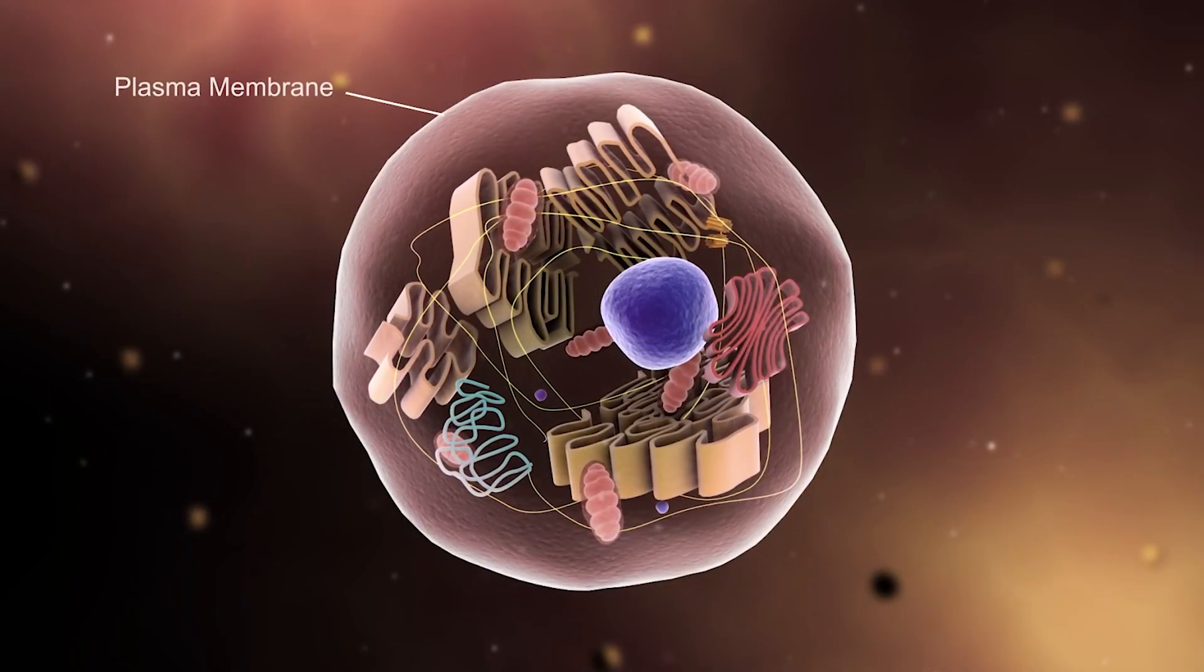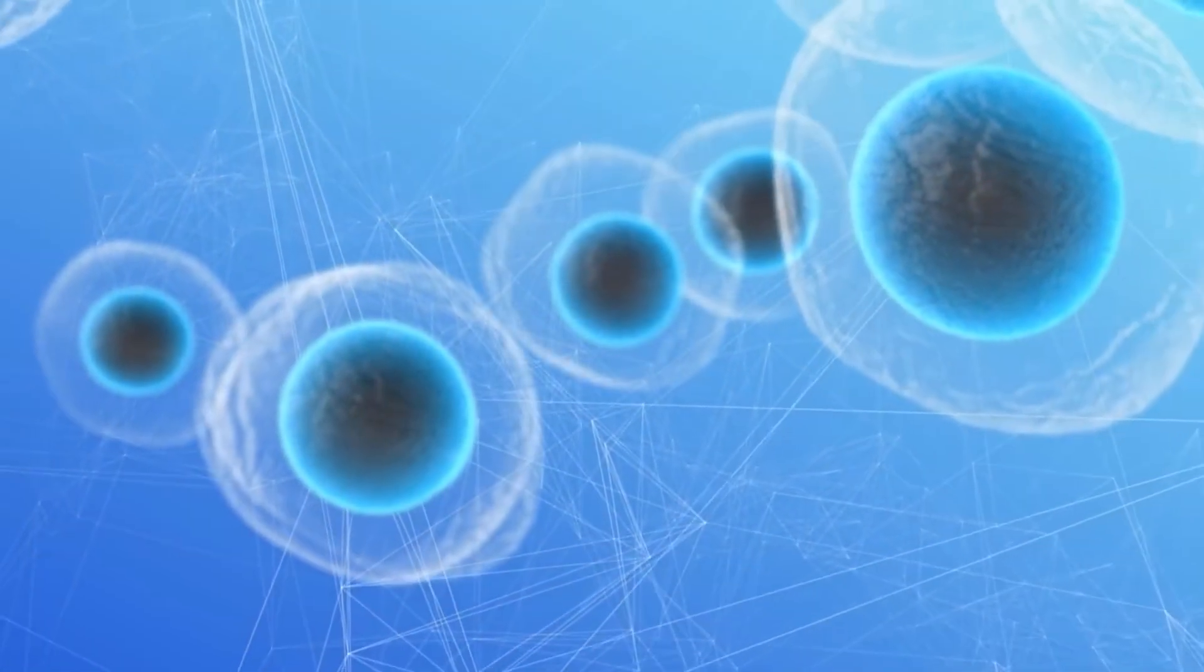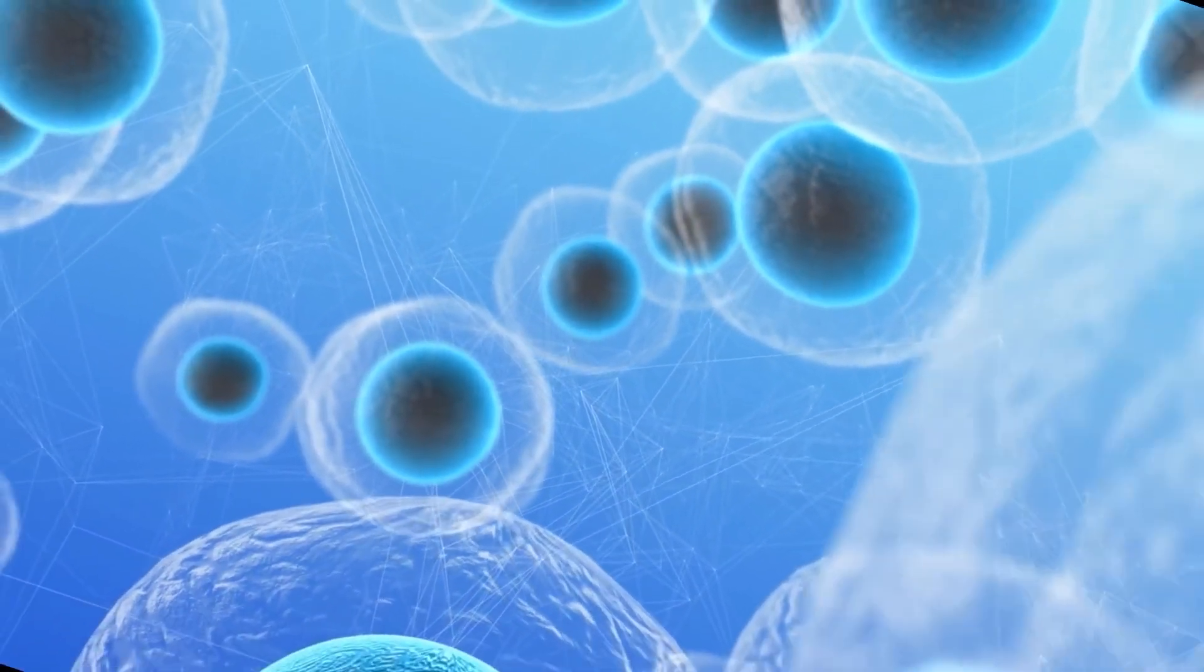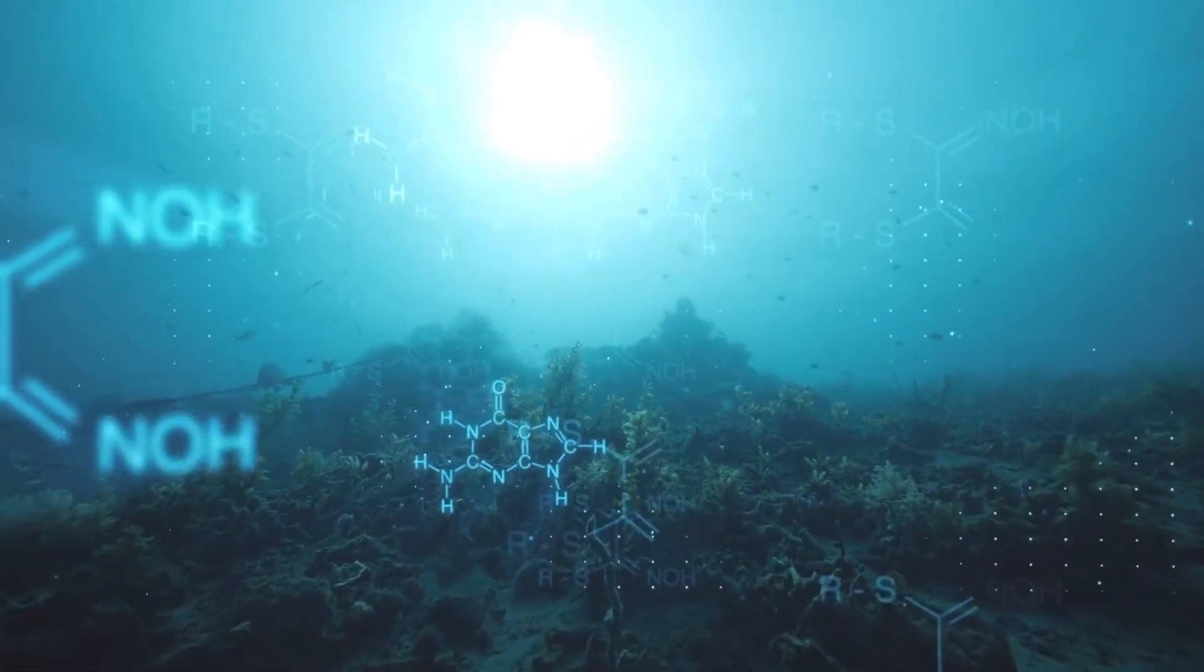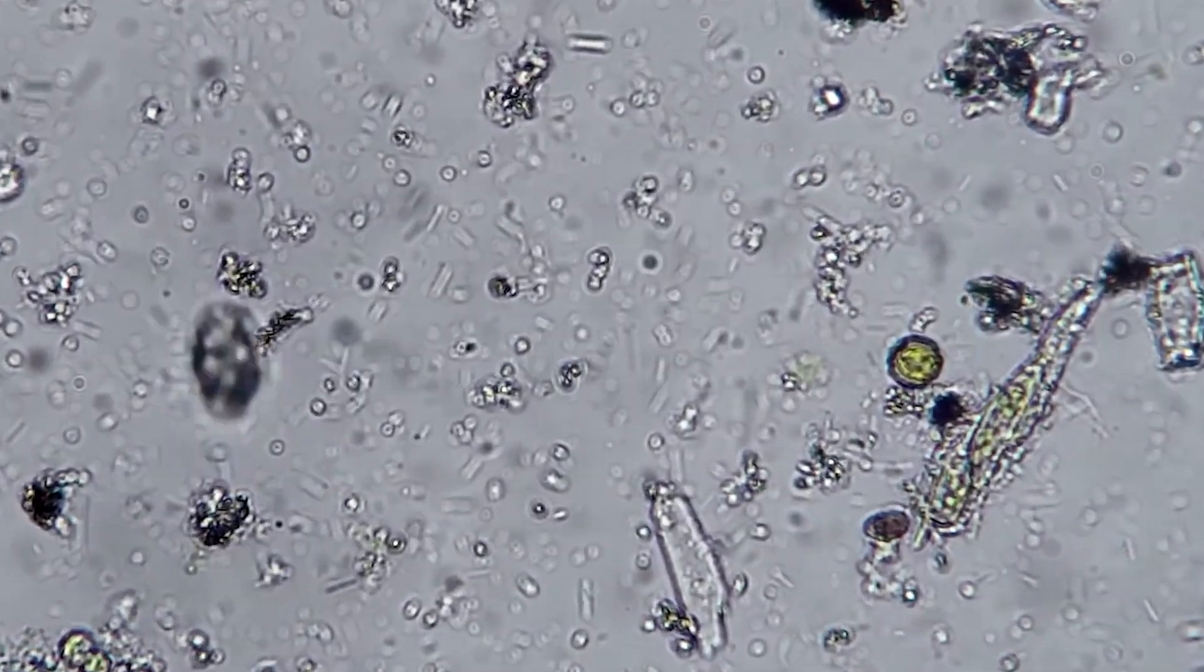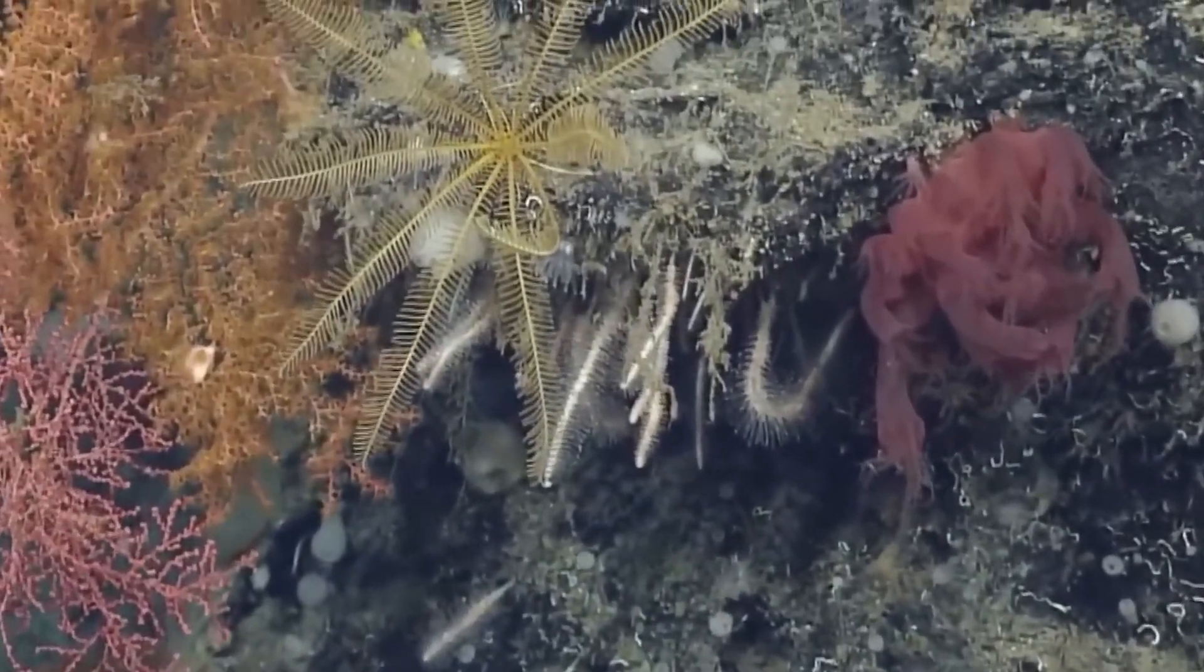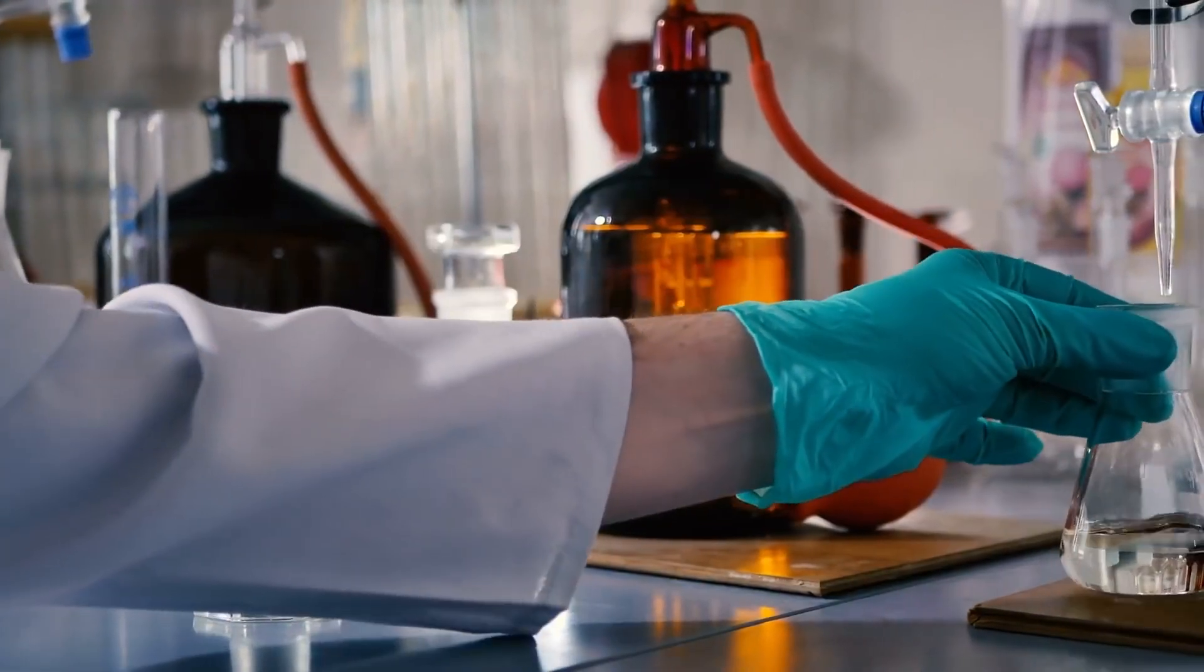Protocells were not alive in the way we define life today. They had no genome. No true metabolism. But they formed naturally. Tiny bubbles of lipids floating in water. Capable of absorbing molecules, growing, and even dividing. Like primitive containers, they protected chemical reactions happening inside. Some may have survived longer than others. Some may have evolved by accident. And slowly, the line between chemistry and biology began to blur.